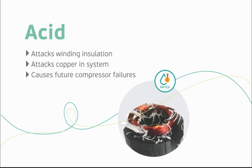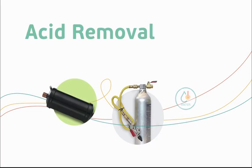If not properly removed, these contaminants can cause a subsequent failure in a matter of hours. Acid test kits and sight glasses work well for identifying a system contaminated with moisture and acid. Once acid is identified, we need to follow a cleanup procedure involving a system solvent flush followed by a dry nitrogen purge. These solvents are readily available from a refrigeration wholesaler, and severe burnouts require this flush to properly remove contaminants.